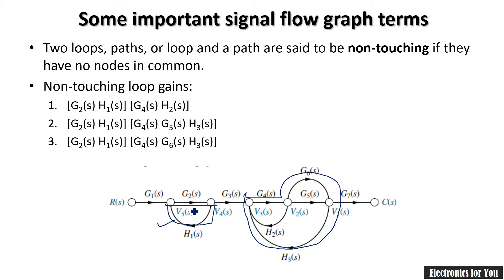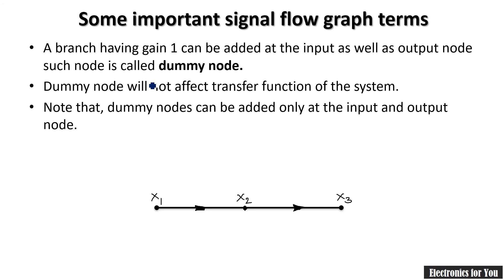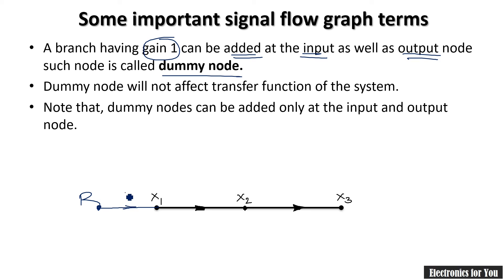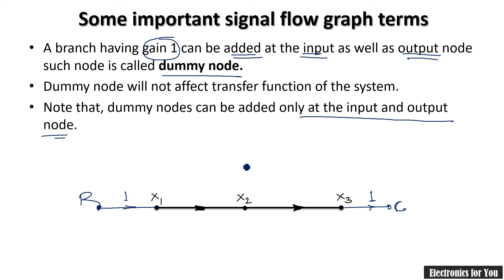One more term is the dummy node. A dummy node is a branch having gain equal to one and can be added at the input as well as the output. For example, a node 'r' added at the input with gain one is a dummy node, and a node 'c' added at the output is also a dummy node. Dummy nodes can only be added at input or output, not at intermediate nodes, and must have gain equal to one.